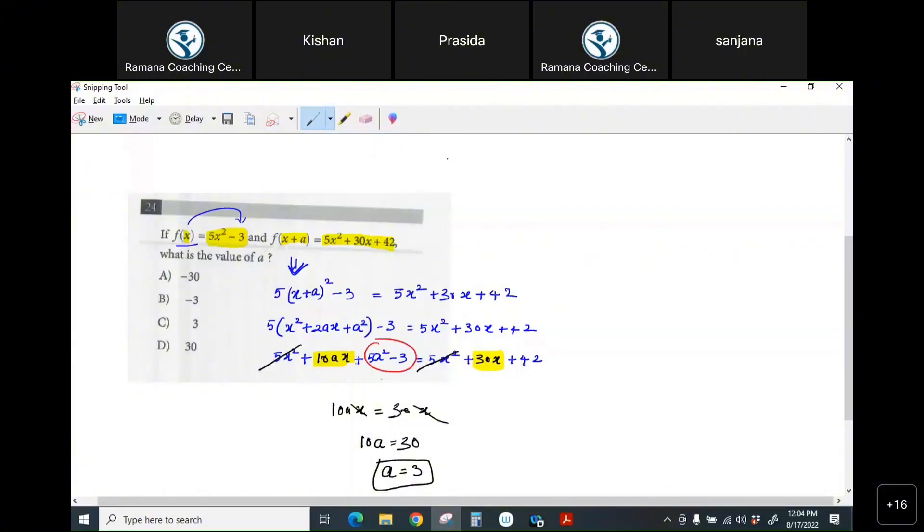...the constant term on the left and compare it with the constant term on the right side. So 5a² equals 45, a² equals 9, a equals 3. Same thing.